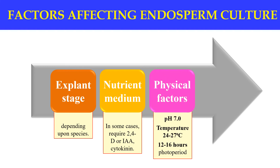The next factors are the physical factors that affect the culture. The pH of the medium should be 7, the temperature should be about 24 to 27 degrees centigrade, and the photoperiod required is 12 to 16 hours. These are the certain factors which can affect endosperm culture.